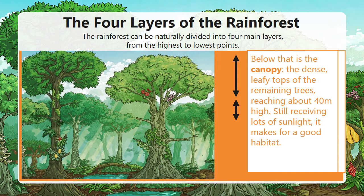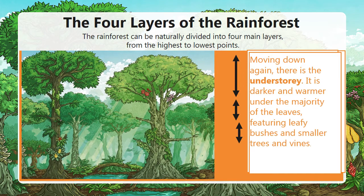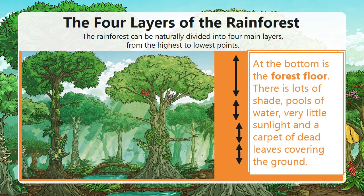The canopy still receives lots of sunlight and makes for a good habitat. Moving down again, there is the understory. It is darker and warmer under the majority of the leaves, featuring leafy bushes, smaller trees and vines. At the bottom is the forest floor. There is lots of shade, pools of water, very little sunlight, and a carpet of dead leaves covering the ground.